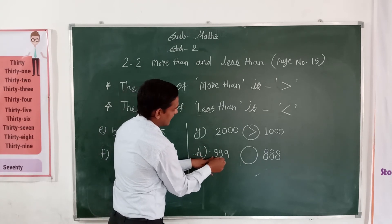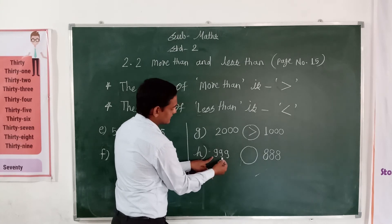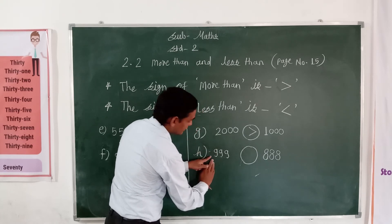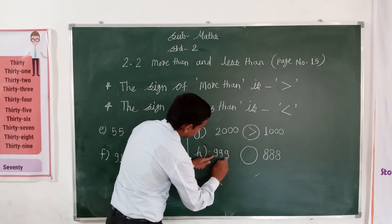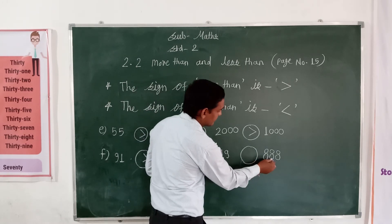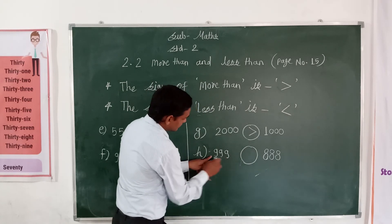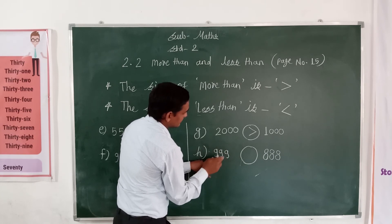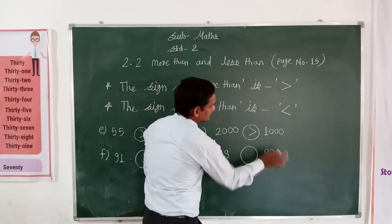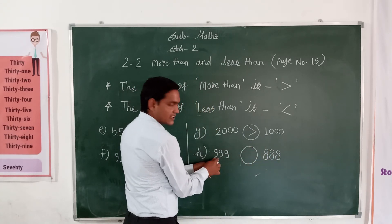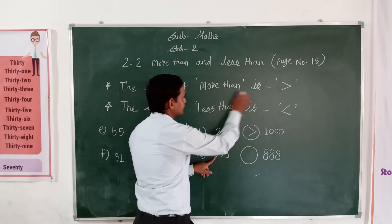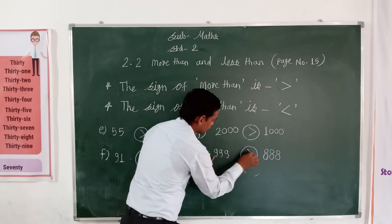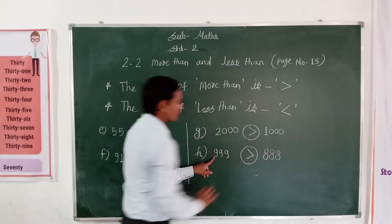Look here. These numbers are 999 — triple nine — and 888. The first number, 999, is bigger than 888. The first number is the greater number, means more. This is the more than sign. Write down: 999 is more than 888.